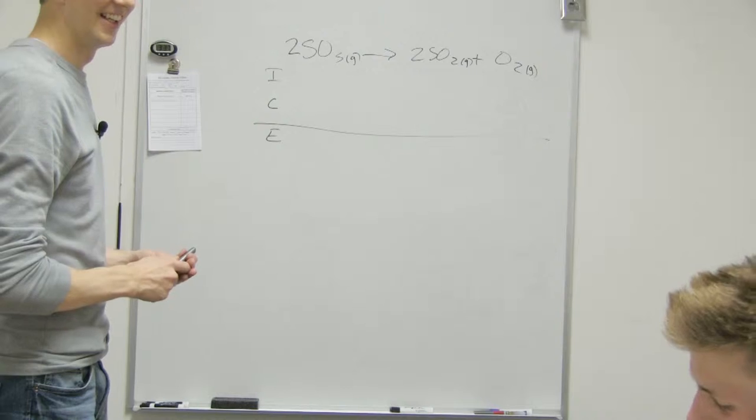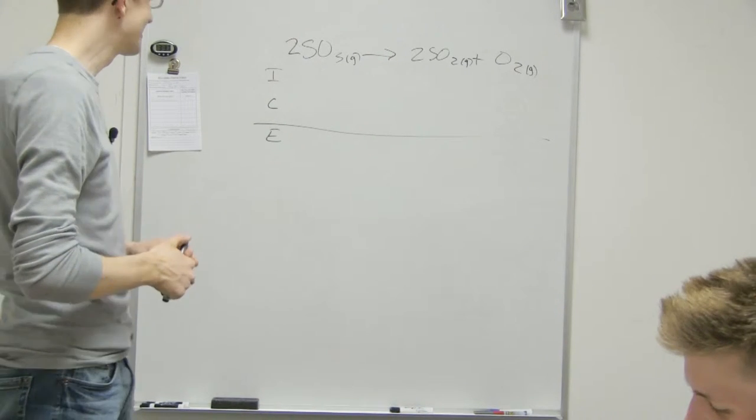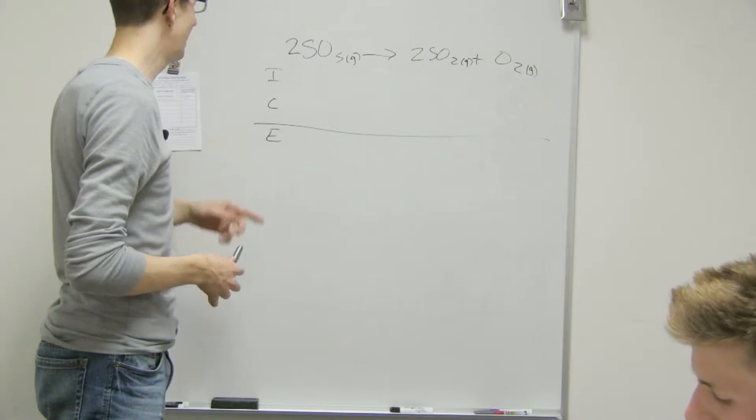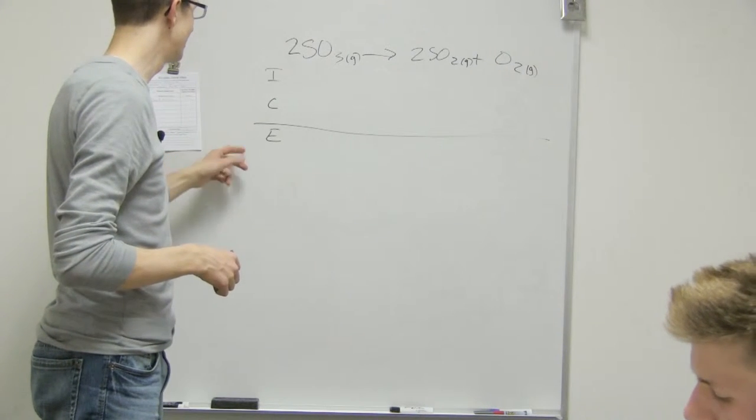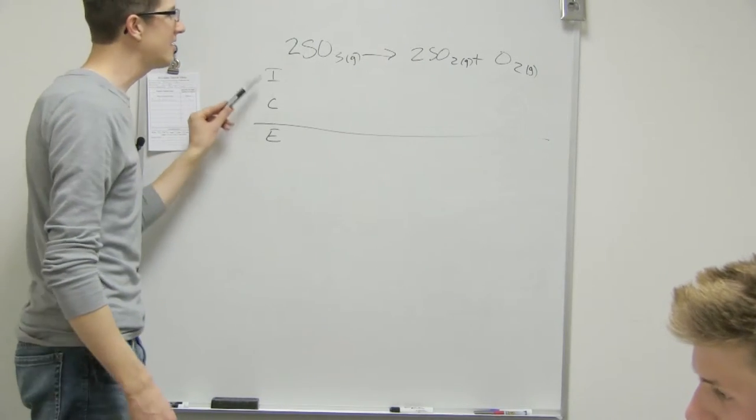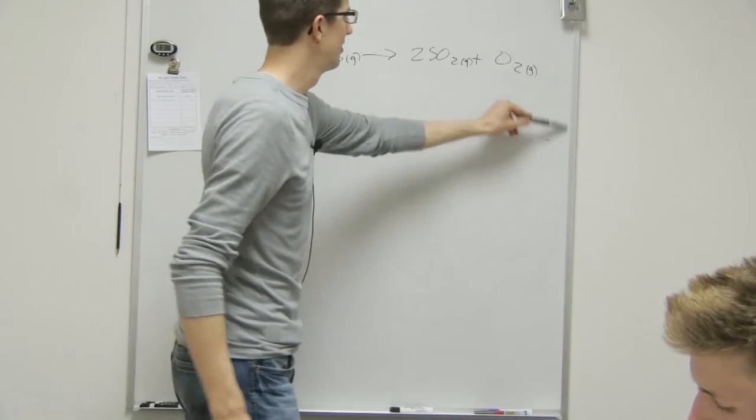That's why it's called an ICE table. I never even knew that. Oh really? This is why it's kind of nice. So an ICE table is just the acronym for Initial, Change, and Equilibrium.